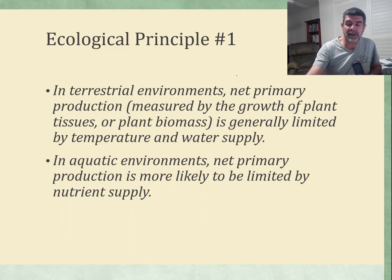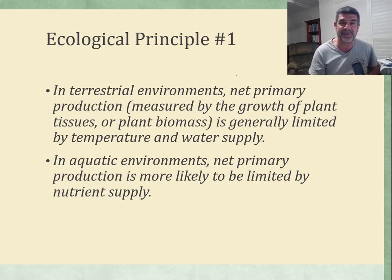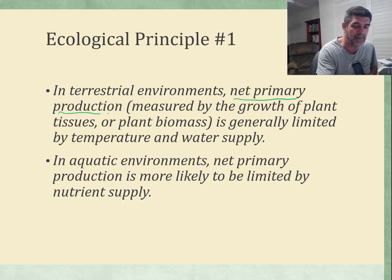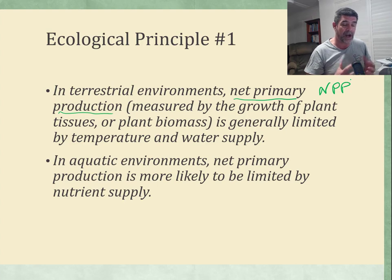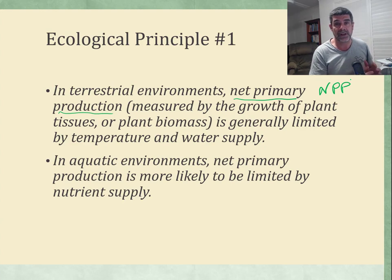As we go through this module, I'm going to share some important ecological principles with you, because to study ecosystem dynamics we need to understand some of the ways that ecology is done. The first principle I want to look at is that in terrestrial environments, net primary production — often abbreviated as NPP — which is basically how much material is tied up in the plants, the first of the trophic levels and the start of all food chains, is generally limited by temperature and water supply. These are the two key factors that contribute to the amount of plant material there is.